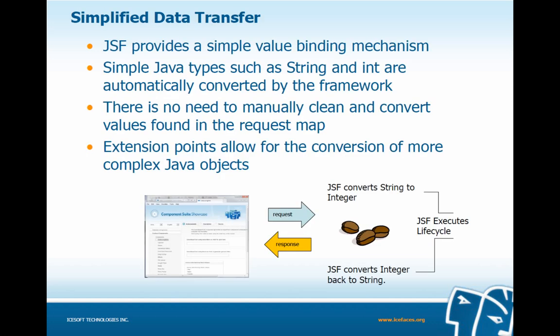JSF provides a simple value binding mechanism to bind our view to our model. Simple Java types such as String and int are automatically converted by the framework. When we submit our form, values are sent as strings in a request parameter map, but those values may have different data types server-side in our managed beans. JSF will automatically convert types such as String and int — no need to manually clean and convert these values. Extension points also allow for the conversion of more complex Java objects. JSF converts the string to integer from the request parameter map, the lifecycle executes, and then JSF converts the integer back to string and sends the response back to the client.